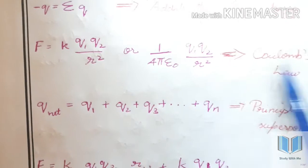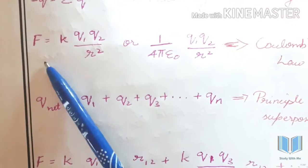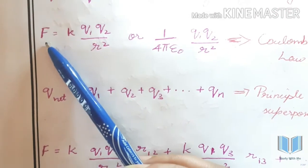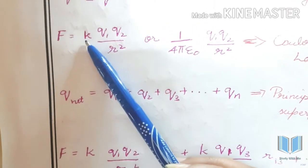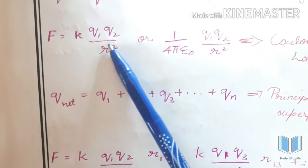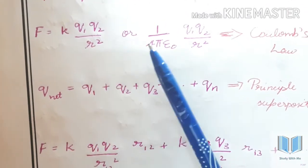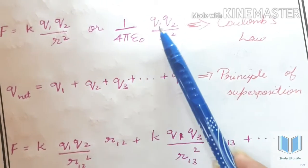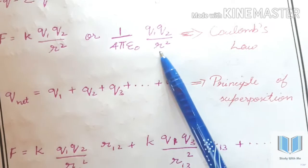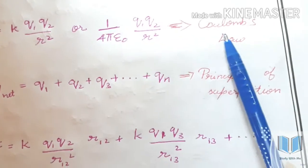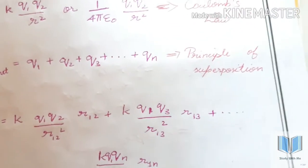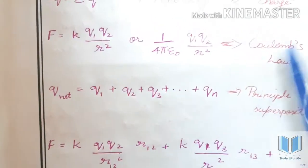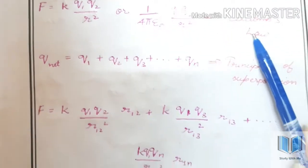The next formula is force. F is equal to k q1 q2 by r squared. The value of k is equal to 1 by 4πε₀. This is Coulomb's law. Coulomb's law is called the backbone. I am applying this as Coulomb's law.